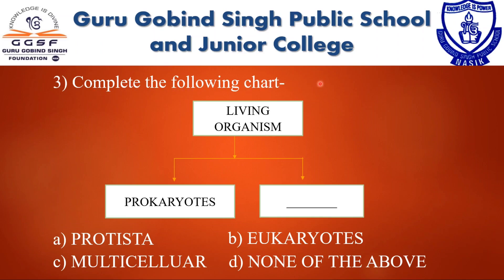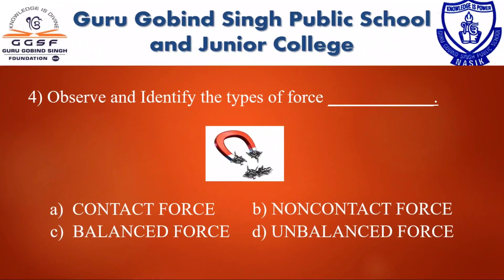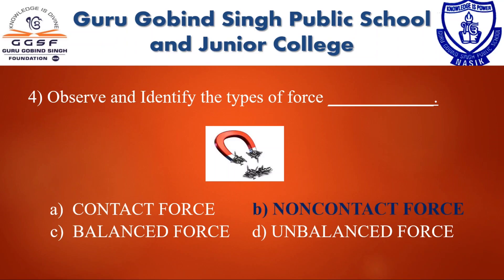Third question: Complete the following chart. Living organisms are classified into two types — one is prokaryotes and the second is eukaryotes. Next question: Iron nails get attracted towards a magnet but there is no contact between the two objects. Identify the type of force. The answer is non-contact force.